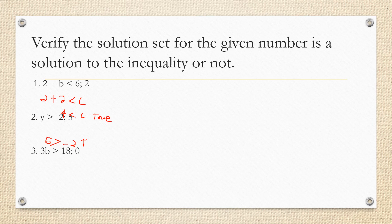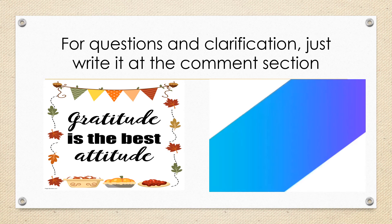3b greater than 18. Now, if your b is 0. So, 3 times 0 greater than 18. Okay. So, 3 times 0 is 0. 0 is greater than 18. This statement is false. All right. Next.